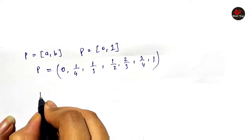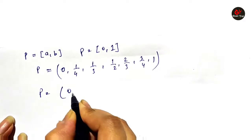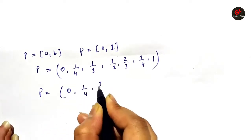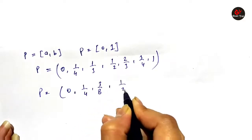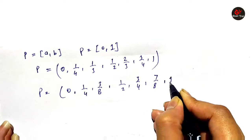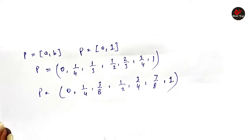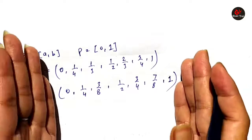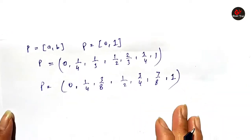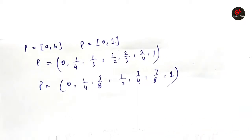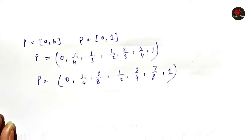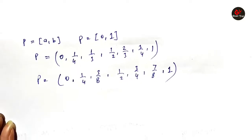Similarly, we can represent another partition of the same interval: 0, 1/4, 3/8, 1/2, 3/4, 7/8, 1. So we can take as many elements as we want, including 0 and 1, as it is a closed interval, and represent any number of elements in between. In this way we will do the partition of closed interval A-B.